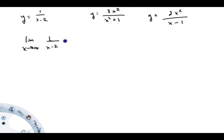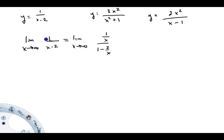As far as how we actually do limits like this, one of the tricks is to divide everything by the highest power of x you see. X is to the first power, so I'm going to write this limit as x goes to infinity of (1/x) over (1 minus 2/x). What I've done is taken everything and divided by x. Since I did the top and the bottom, I haven't changed anything.